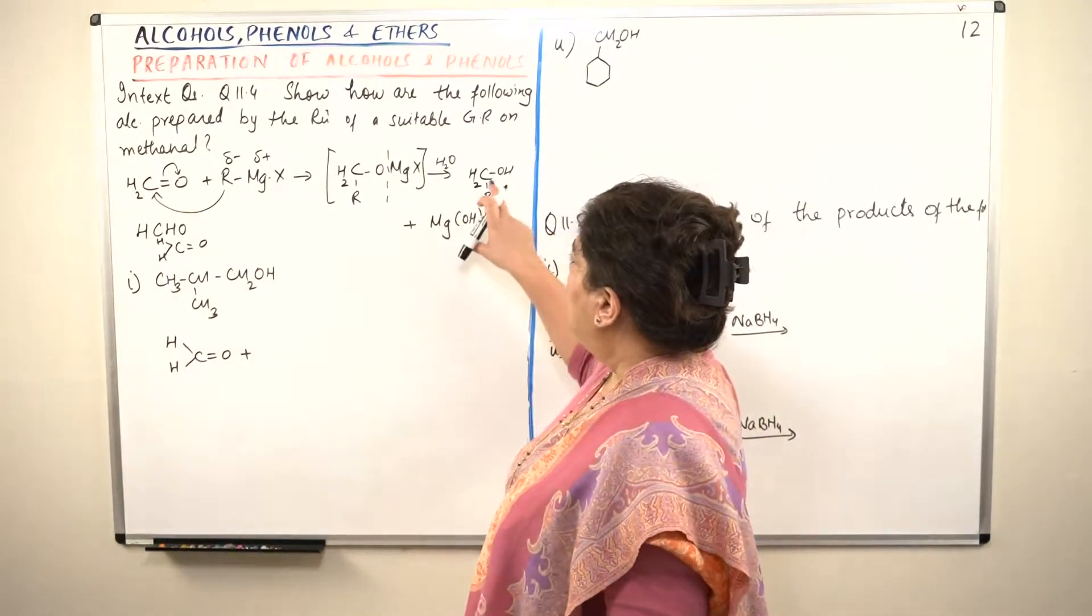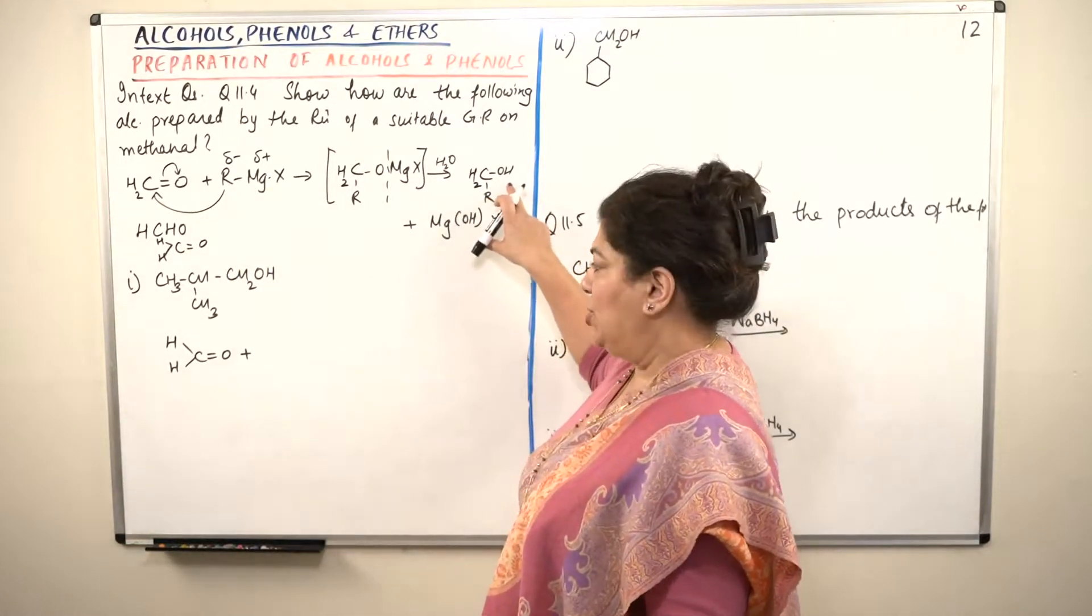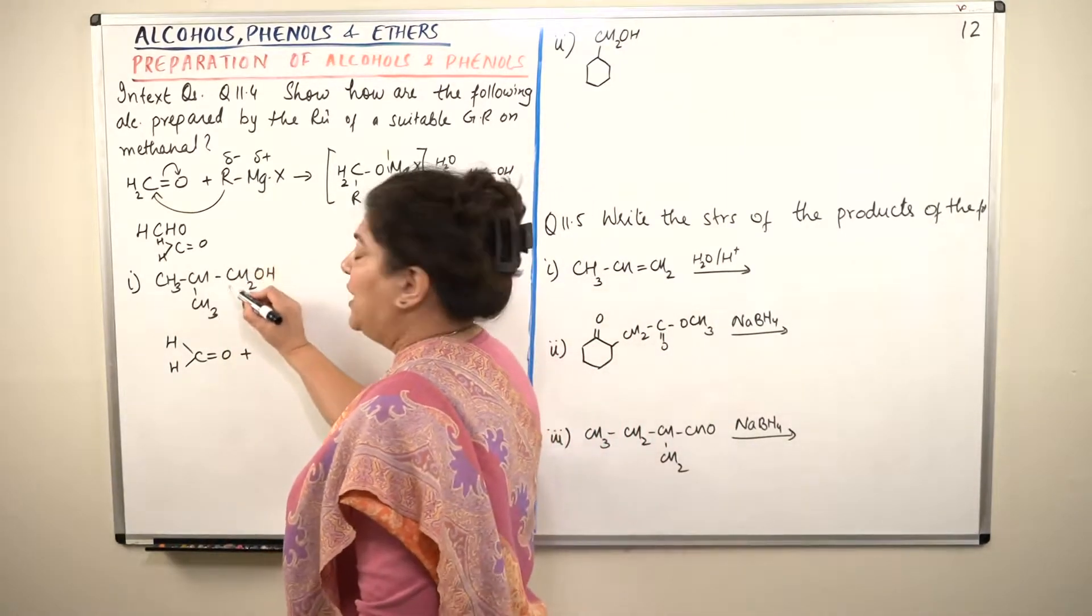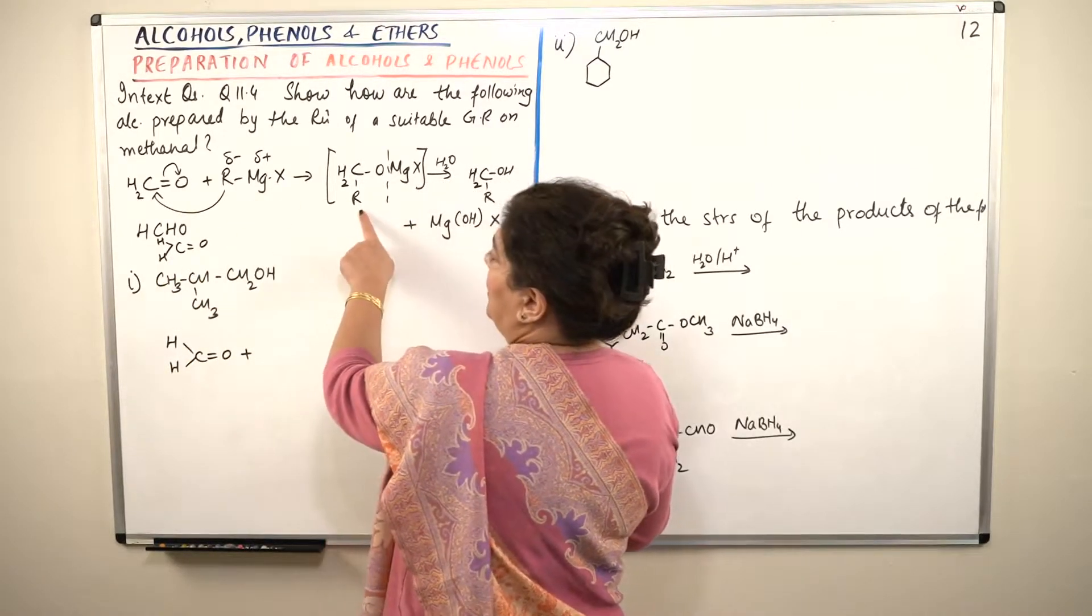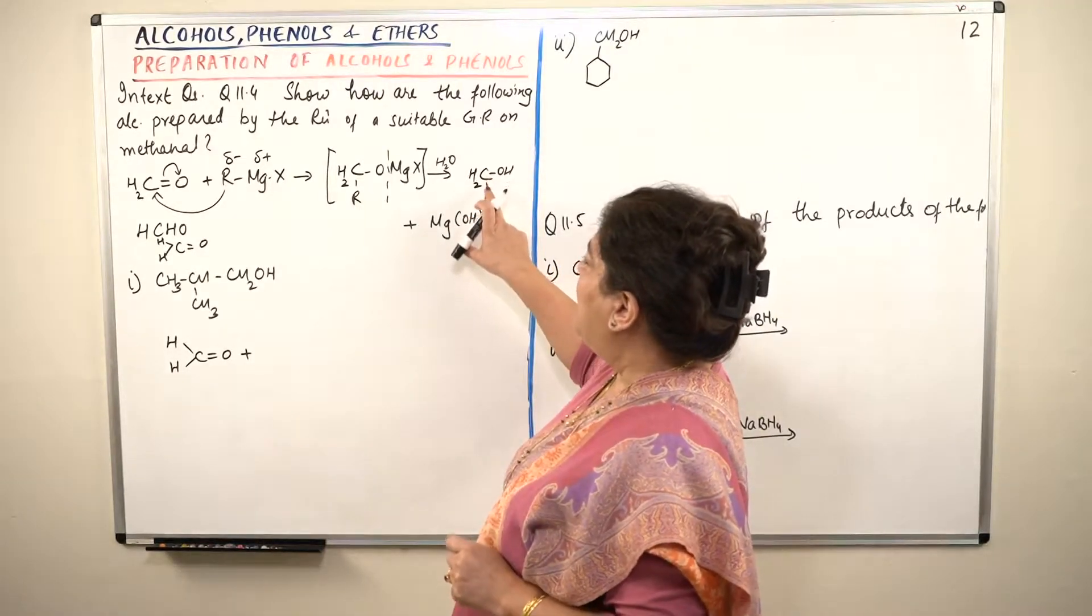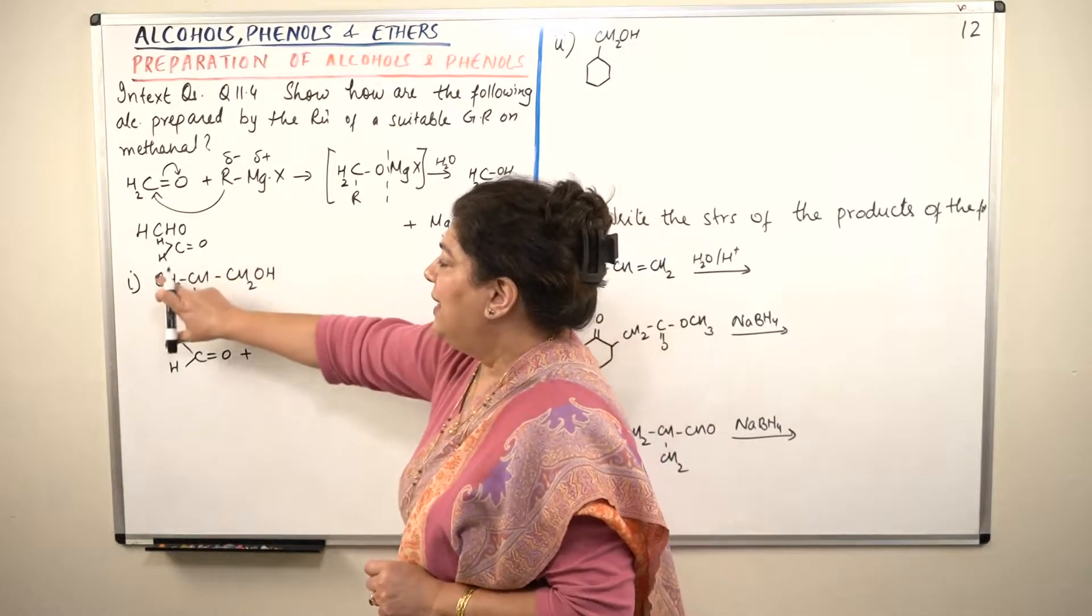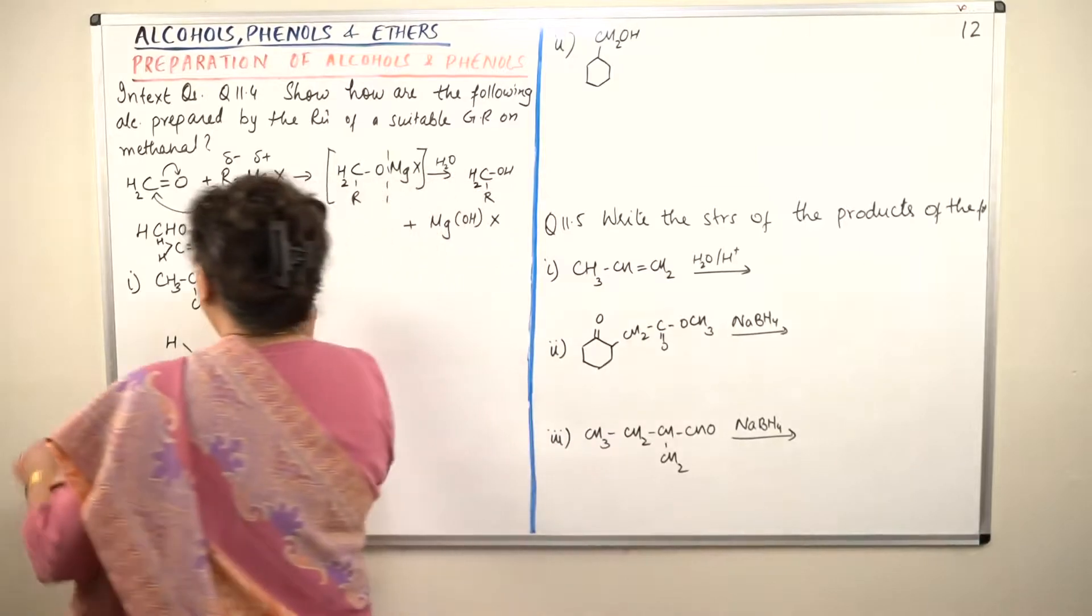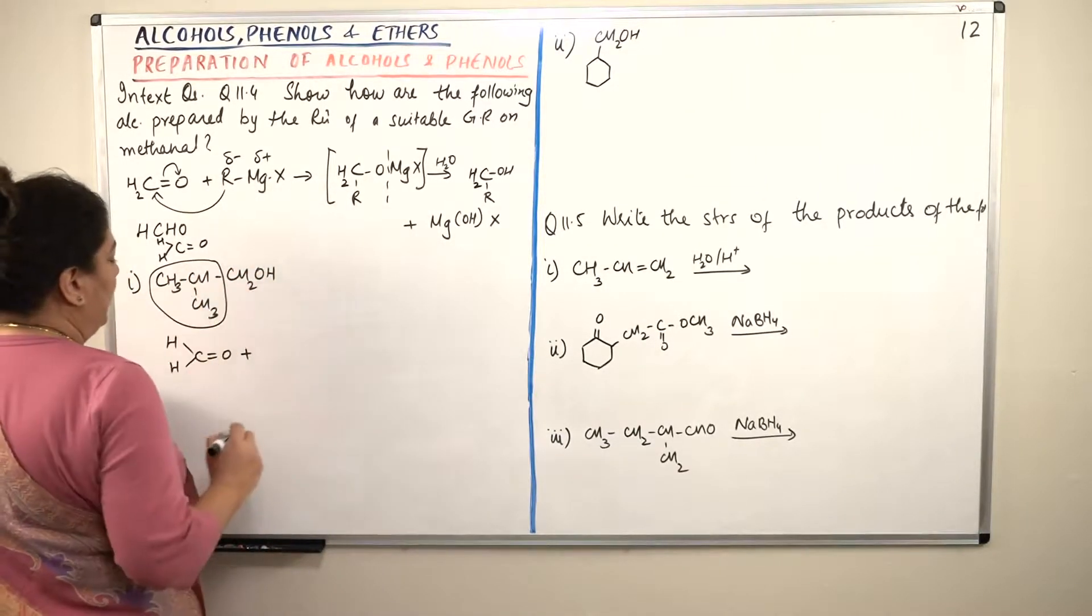It is HCHO or we can write HCHO double bond O is methanal plus what will be the Grignard reagent. The Grignard reagent is only providing you the R to complete the molecule. In the end, the aldehyde, that is the methanal, is going to give you CH2OH. So in the product CH2OH is the part which has been obtained from the aldehyde. And this is the alkyl part that is R. So this is what you are going to be getting from Grignard reagent.